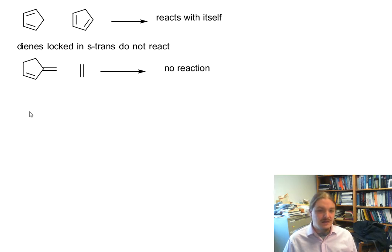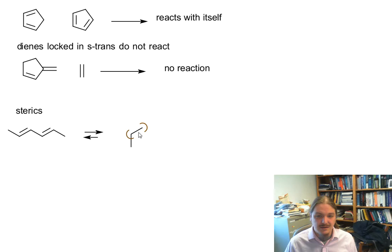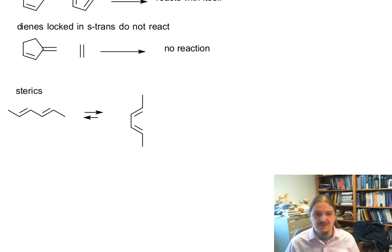One last consideration that we're talking about is the influence of sterics. So you might look at this diene and say that there might not be a lot of steric hindrance here because in the S-trans conformation, everything looks like it's far away from each other. But in the S-cis conformation, even in this case, things look a little bit different. So in this particular case, everything's still kind of far apart from each other.